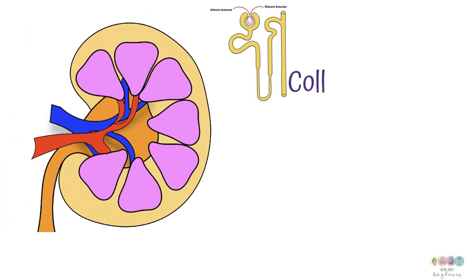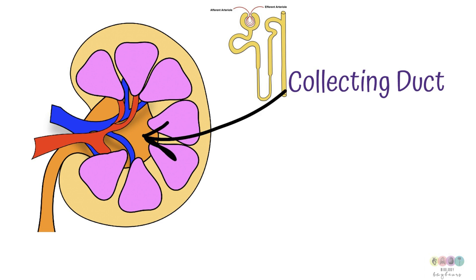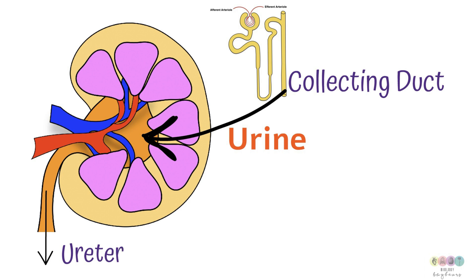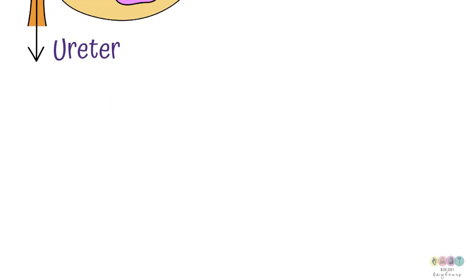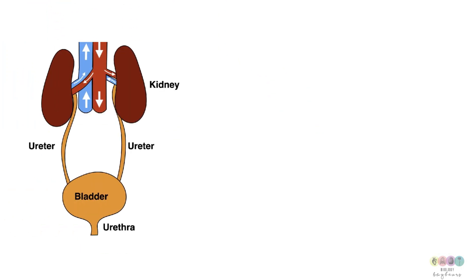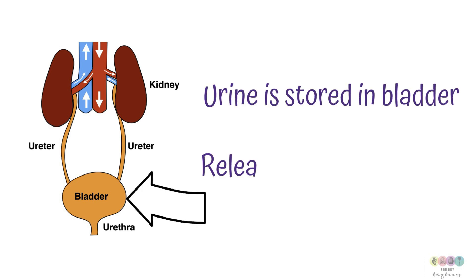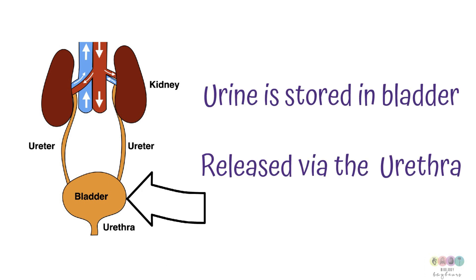Urine formation involves three stages — filtration, reabsorption, and secretion — and the substance passing out of the collecting duct is now urine. Urine makes its way to the renal pelvis, and from there passes out of the kidney through the muscular tubes, the ureters, one from each kidney. The urine is stored in the bladder, a muscular bag, and eventually exits the body through the urethra, which has two sphincter muscles controlling the release of urine.